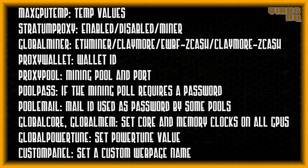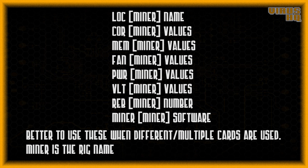Next, global power tune — here you set the power tune value. For Nvidia, the power tune value stands for wattage. For AMD, the power tune value also stands for wattage but is different, in the range of three to seven. Finally, custom panel — here you type in a 12-digit alphanumeric name that you want to set for the rig, which will be shown on the web page. The main reason I chose Ethereum OS was the ease of use and the online web page, and using this custom panel you can set the web page to the name you want.